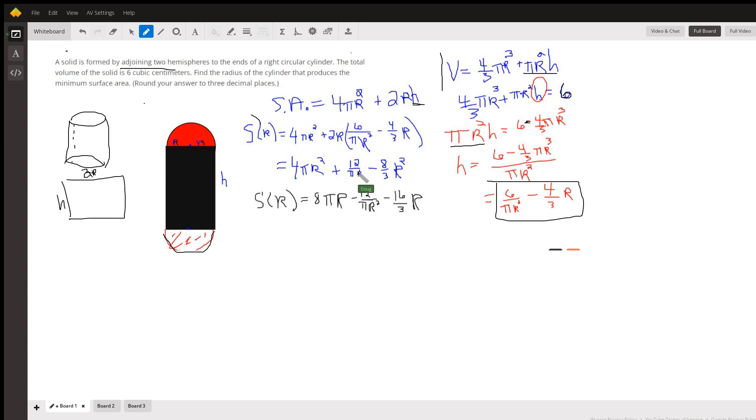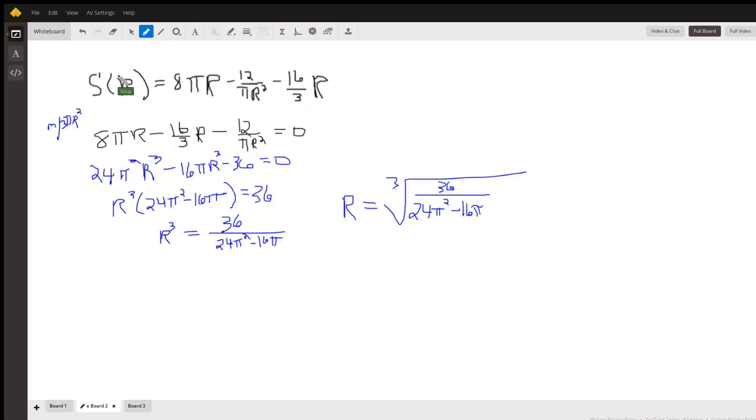Now if you take the derivative of each term, 8πr, think of this as r to the minus 1, so you get minus 12 over πr to the minus 2. And here you get minus 16/3r. We want to set this equal to 0 and solve for r. So here's the first derivative set it equal to 0.